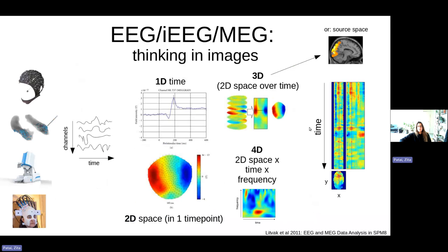Whether you've collected EEG data, MEG data, or intracranial data, you have some sort of time-varying signal across multiple channels. There are multiple ways these signals can be converted into images in SPM. One option is a 1D image — just a time-varying ERP in relation to a stimulus presented at time zero, converted into a row of numbers indicating intensity. A 2D space might be a scalp topography — all your channels at one particular time point, for example 185 milliseconds.